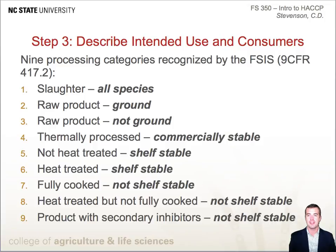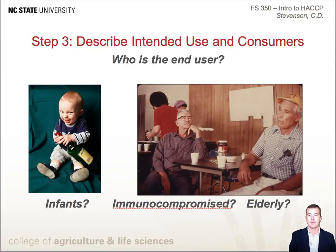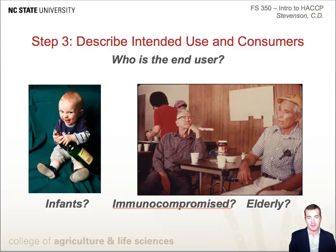This brings us to the next step, describing the intended use and the consumers of the food. Is the product intended for consumers to eat without further cooking? Or is it expected that consumers would understand that they should cook or fully reheat the product? Or is the product sold as an ingredient to be used in another product, for example, pepperoni for pizza companies? There are nine processing categories recognized by the FSIS, listed in Title 9, Section 417.2. It is also critical to define who the intended end user is — whether the food is going to be eaten by consumers in general, or by an infant, immunocompromised individual, or the elderly. These considerations will all bear great weight as you draft your HACCP plan.